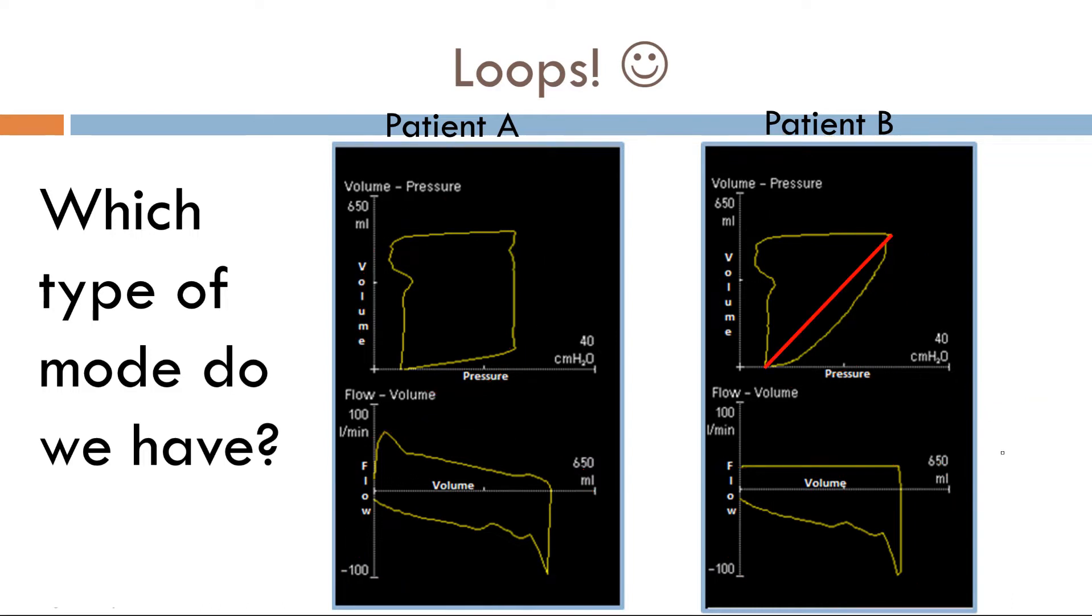Now, what does this slope designate? This is volume over pressure, also known as compliance. Now, looking at the volume pressure loop, you can roughly eyeball what the compliance is. This is normal compliance for a patient.